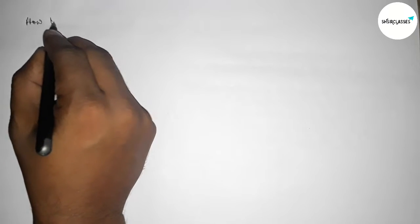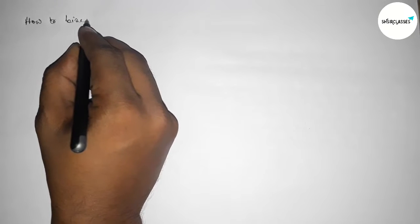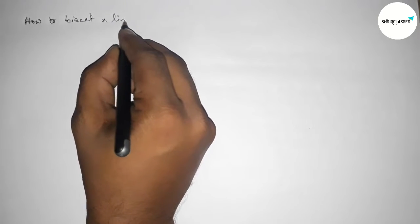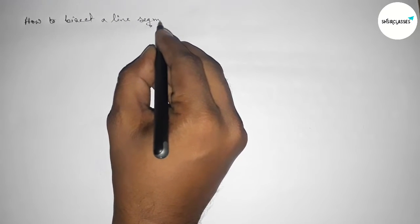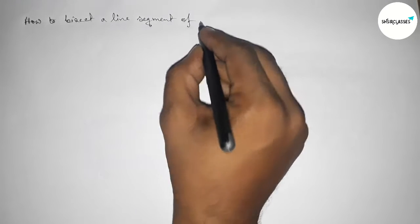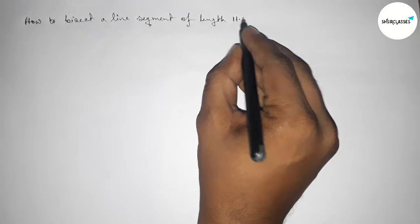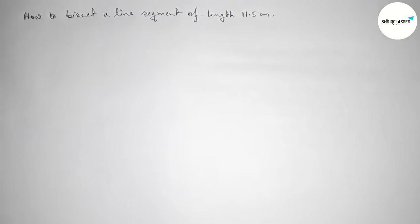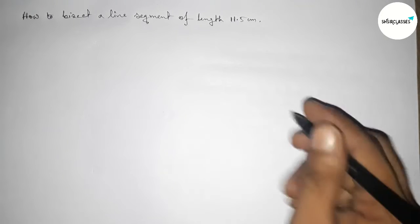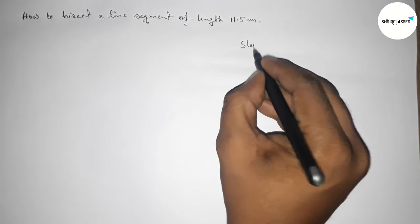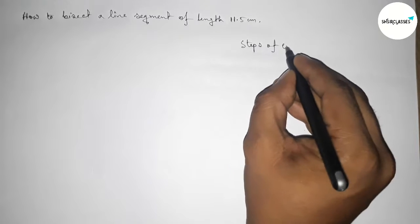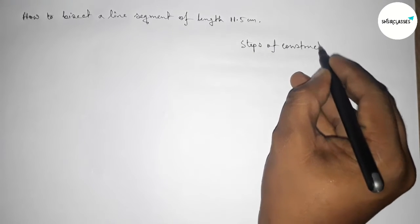Hi everyone, welcome to Essay Share Classes. Today in this video, we're discussing how to bisect a line segment of length 11.5 centimeters by using a compass. So let's start the video. First of all, leaving here some space to write the steps of construction.